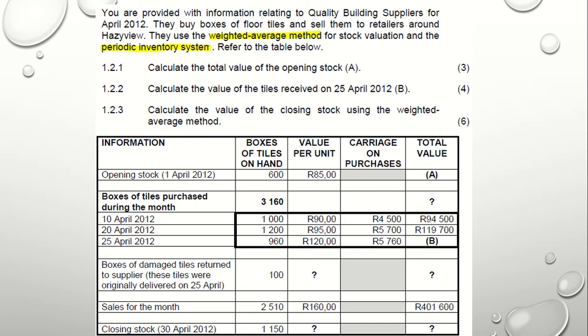The cost price of goods returned — boxes of damaged tiles — is $120 multiplied by 100, which gives you $12,000 as the cost price of tiles returned. You also have sales for the month of 2,590 units multiplied by $160, giving you a sales figure of $414,400. The problem now is calculating the value of closing stock.